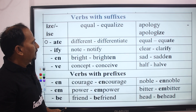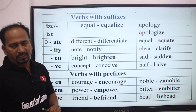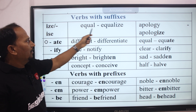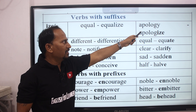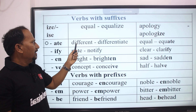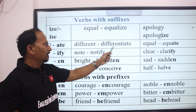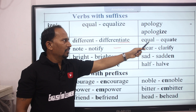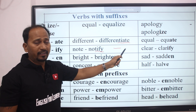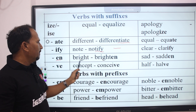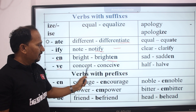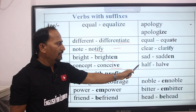Next: verbs with suffix. Suffix -ize: equal → equalize, apology → apologize. Suffix -ate: different → differentiate, equal → equate. Suffix -ify: note → notify, clarify. Suffix -en: bright → brighten, sad → sadden. Suffix -ve: concept → conceive.